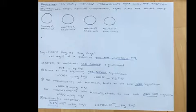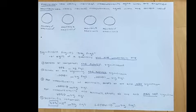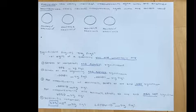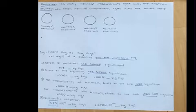Starting with precision and accuracy: precision is how closely individual measurements agree with one another — are you getting the same thing every time? Accuracy is how closely individual measurements agree with the correct value — are you getting what you should be getting.